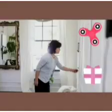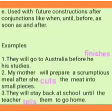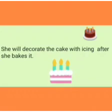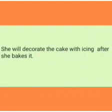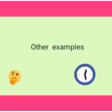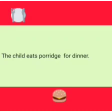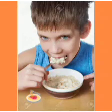Next, to show fixed arrangements. Example: The program begins next Tuesday — this has already been fixed, so 'begins' is a simple present tense. She leaves for Tokyo next week — she has already planned to leave for Tokyo next week. This is a fixed arrangement, and 'leaves' here is a simple present tense.